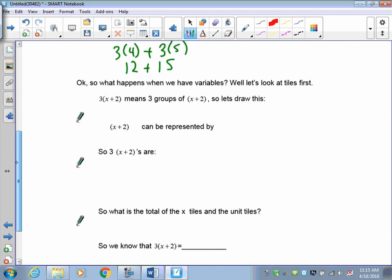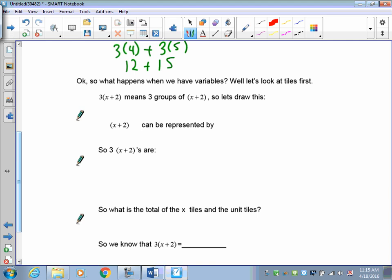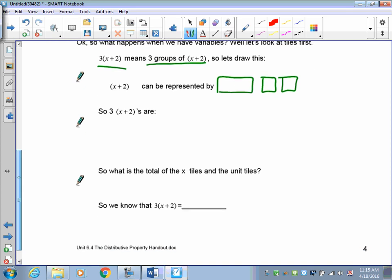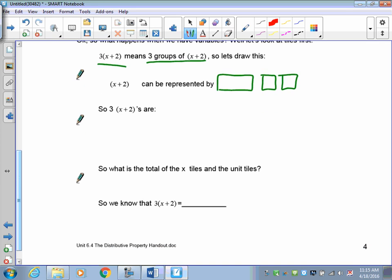Okay, so what happens when we have variables? Well, let's look at the tiles first. How does this work out? How do you represent x plus 2? Well, x plus 2 looks like this. There's x plus 2. Okay, so if I want to take and have 3 groups of x plus 2, all we need to do is draw x plus 2 three times.